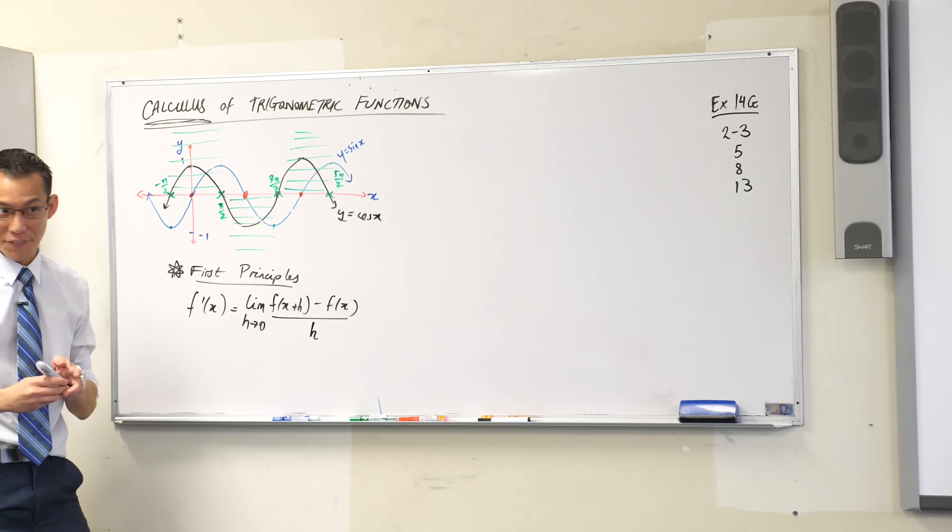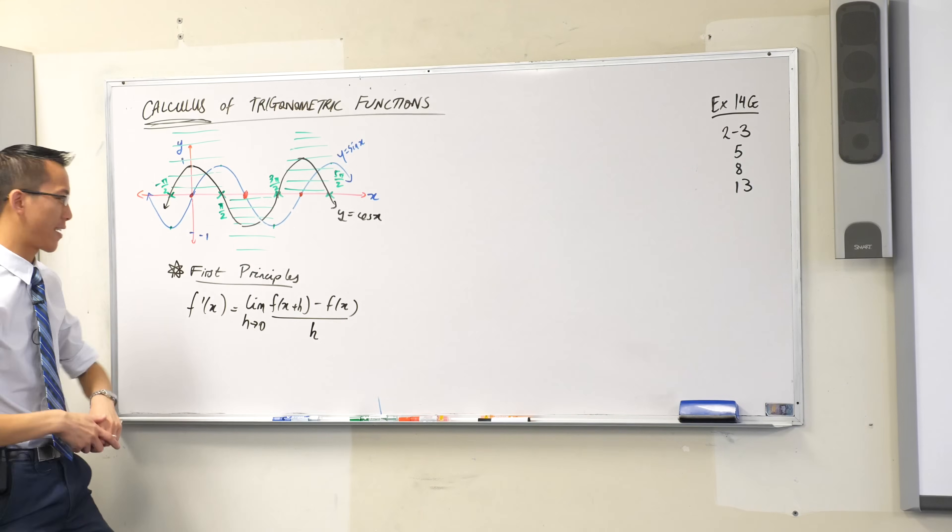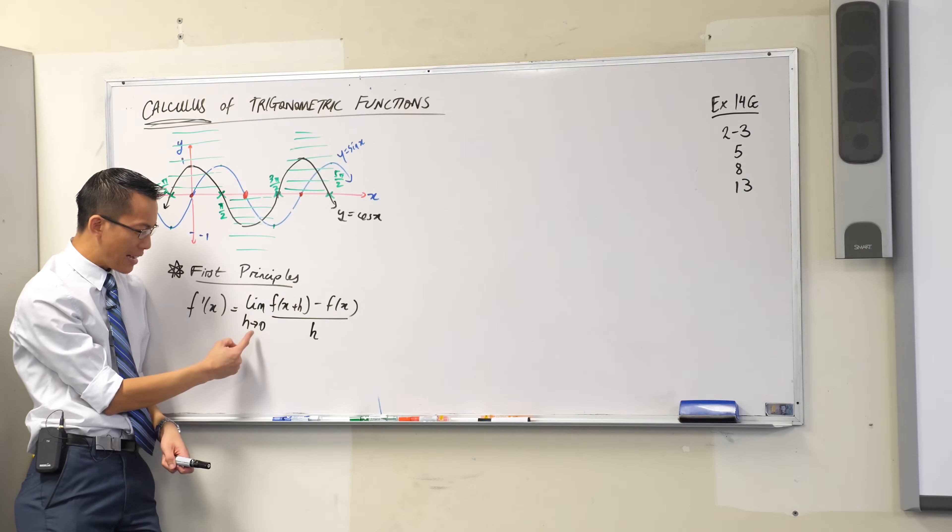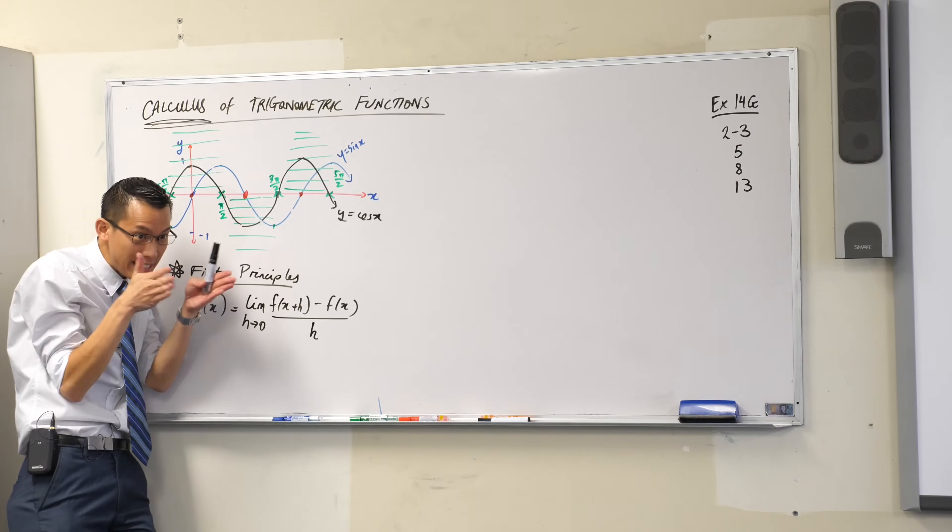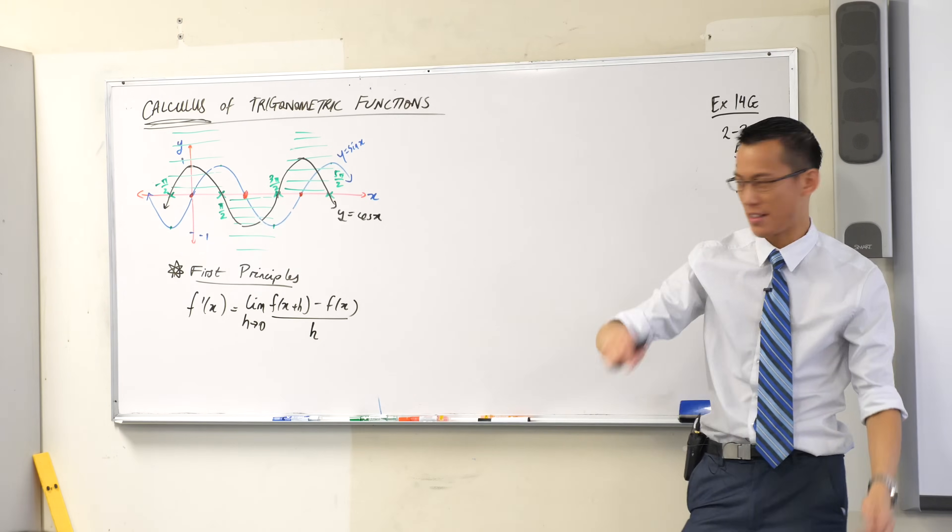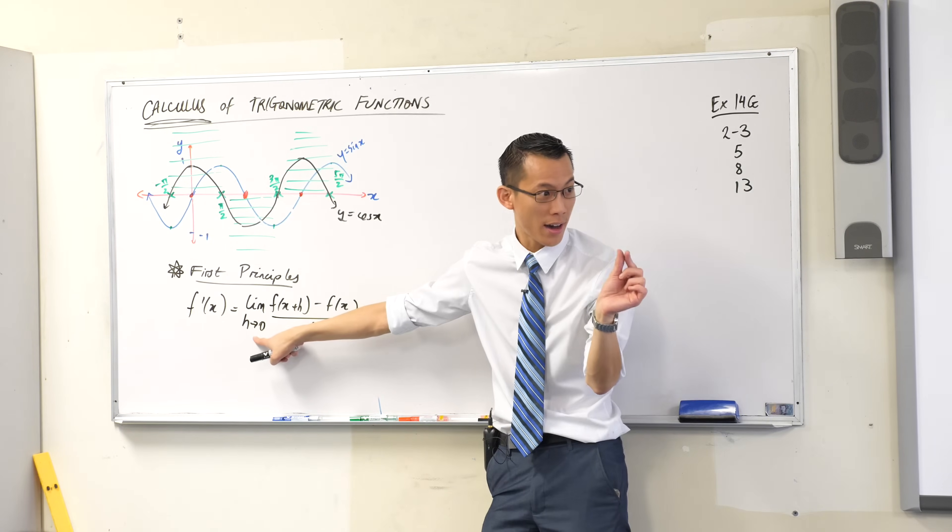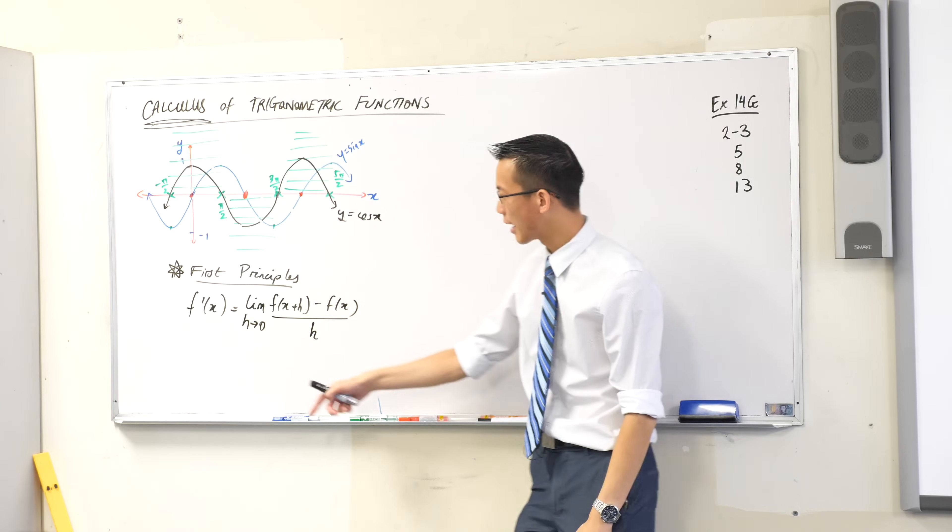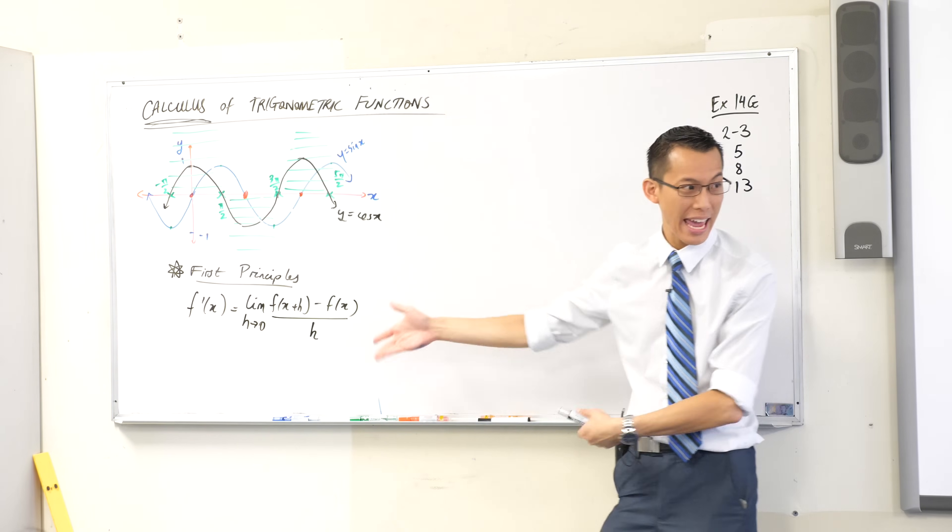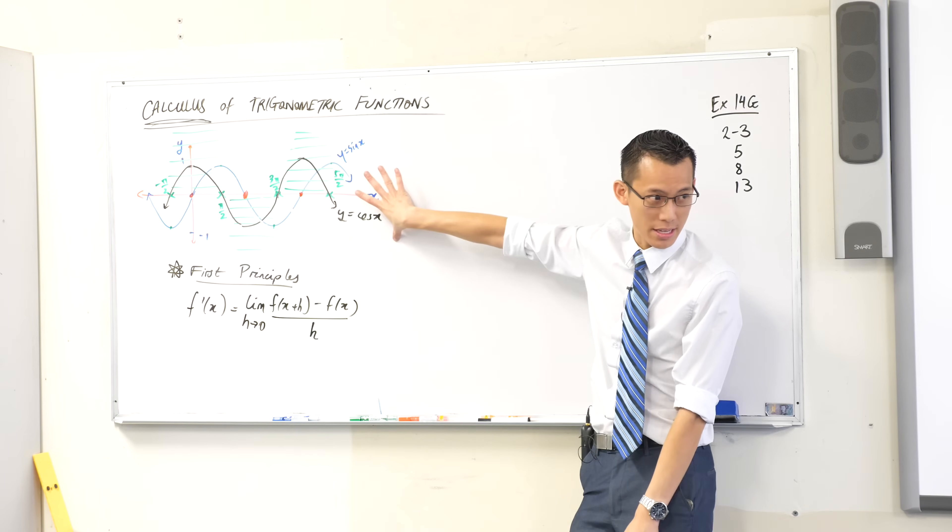So what we're doing here in first principles, cast your mind all the way back like a whole year now, we're thinking about rise over run as the run gets really, really teeny tiny, right? Because we're interested in tangents, not secants. So we actually don't want the two points to be apart. We want them to be right together. So this is how first principles looks. And we actually can use this just fine with this.